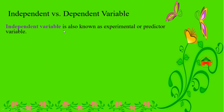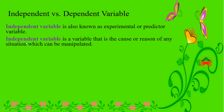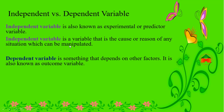An independent variable is also known as an experimental variable or predictor variable. It is a variable that is the cause or reason of any situation, and it can be manipulated. A dependent variable, on the other hand, is something that depends on other factors. It is also known as an outcome variable.